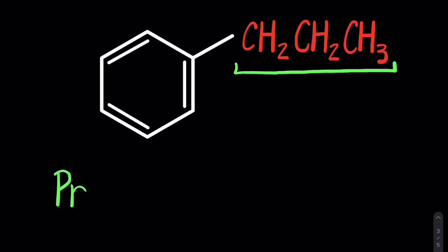All right, so one more simple one. This is a three-carbon alkyl group. Propyl is the name it receives. So propylbenzene.